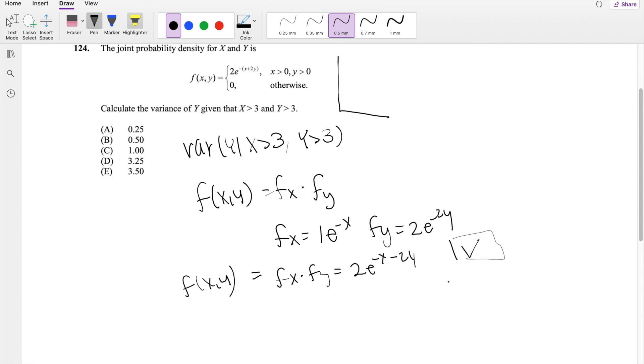So knowing that, we can actually disregard that x is greater than 3, because the value of y does not depend on x. So we can rephrase this and say the variance of y, given y is greater than 3.